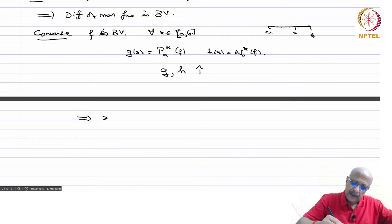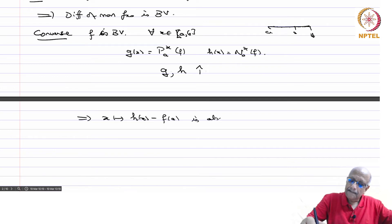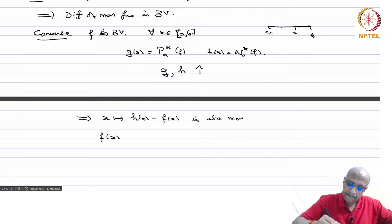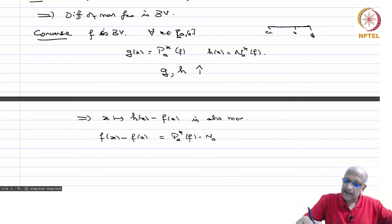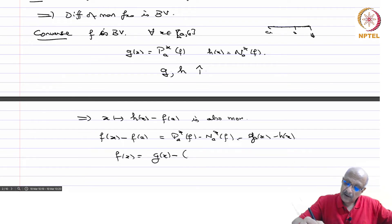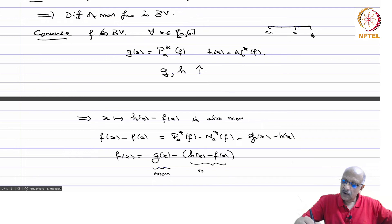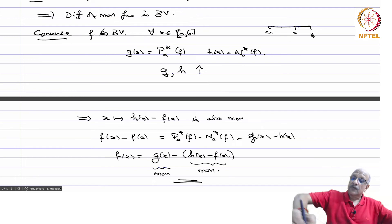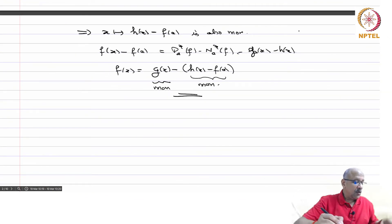In particular, x ↦ h(x) - f(a) is also monotonic. We saw that f(x) - f(a) = P(a,x,f) - N(a,x,f) = g(x) - h(x). Therefore f(x) = g(x) - h(x) - f(a), and this is monotonic minus monotonic. Therefore every function of bounded variation can be written as the difference of two monotonic functions.